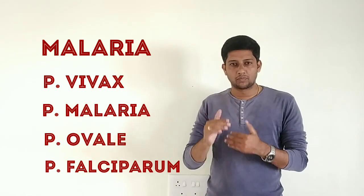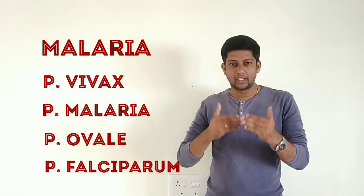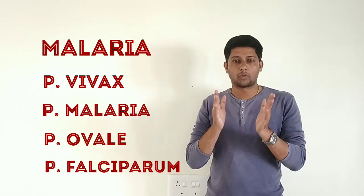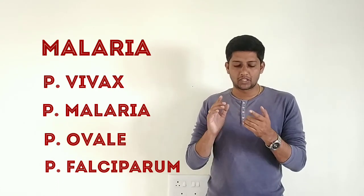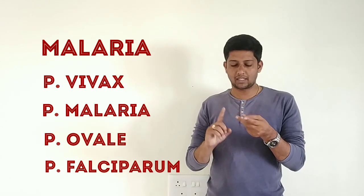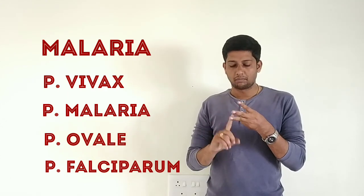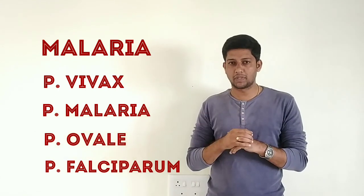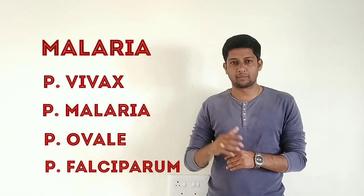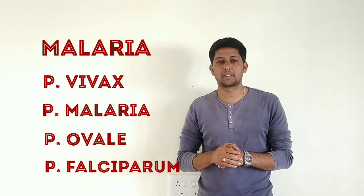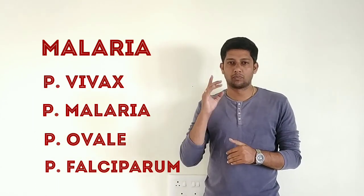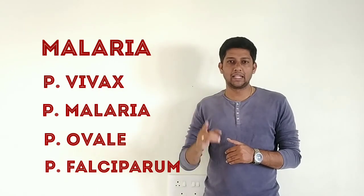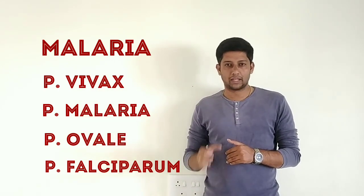There are 4 to 5 species of Plasmodium protozoan. Among them, the ones mentioned in the book are Plasmodium vivax, Plasmodium malariae, Plasmodium falciparum, and Plasmodium ovale. You have to remember these four species.